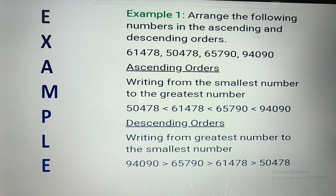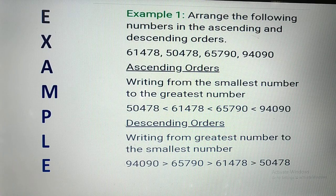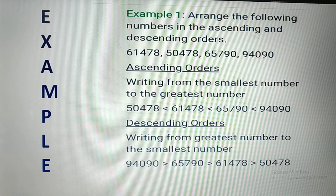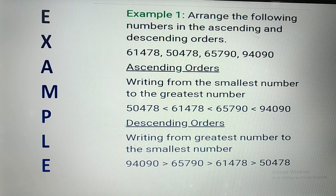For ascending order, writing from the smallest number to the greatest: the smallest number is 50,478, then 61,478, then 65,790, then 94,090. For descending order, we go from greatest to smallest: 94,090 is the largest and 50,478 is the smallest. This is how we arrange in ascending and descending order.